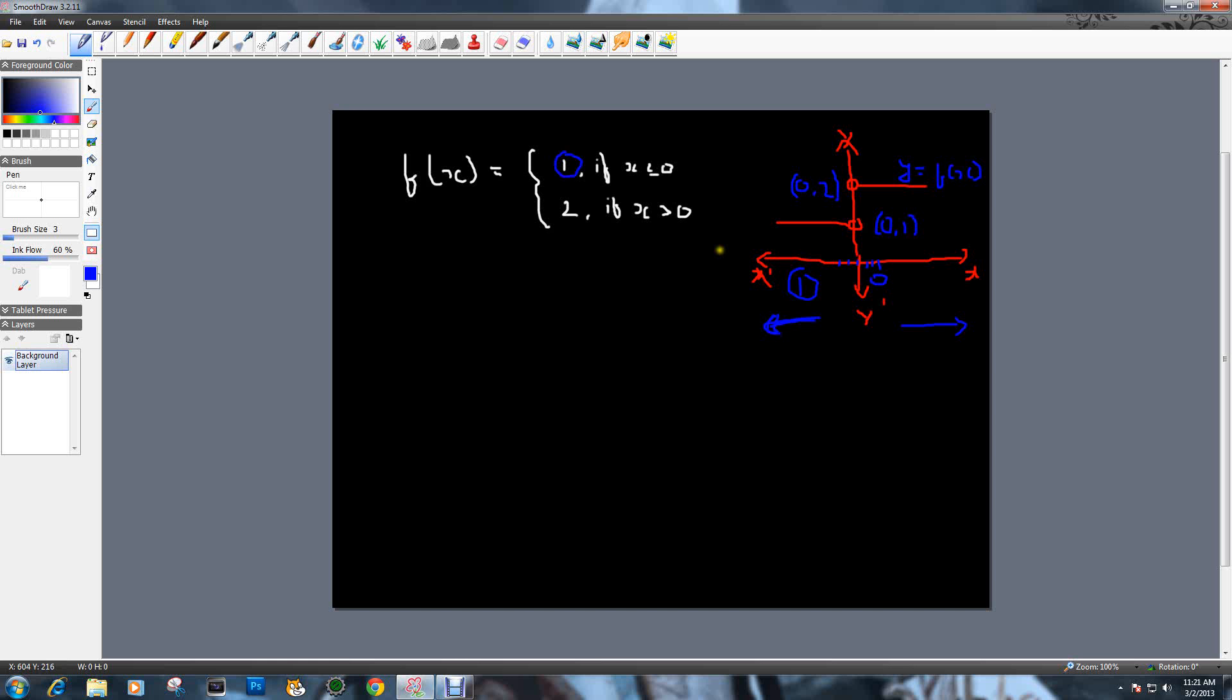Now, for the values of x greater than 0, that is, all the positive values, the value is 2. So this is how the topic about the left-hand limit and the right-hand limit comes in. Anything towards the left, you're talking about the left-hand limit, and towards the right, you're talking about the right-hand limit.